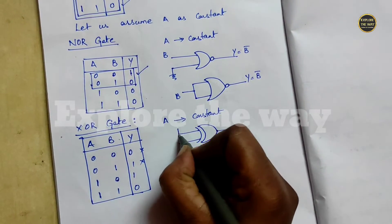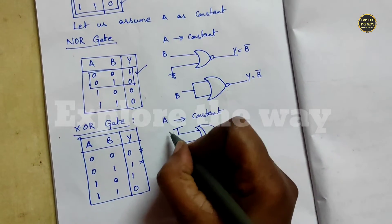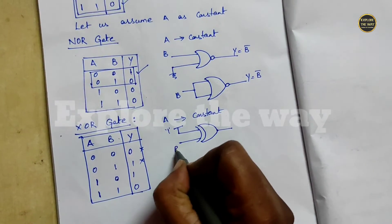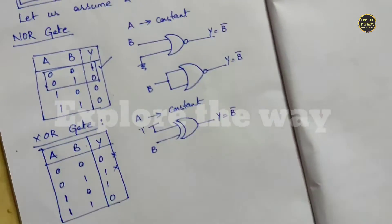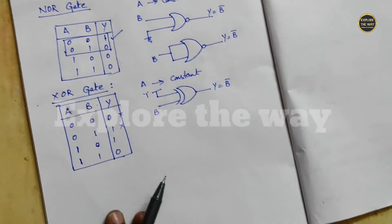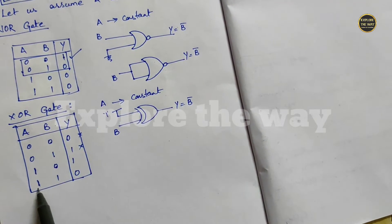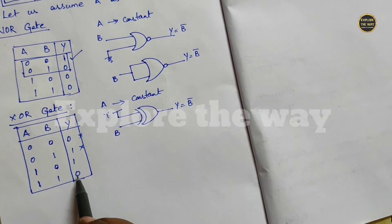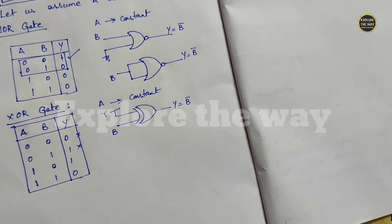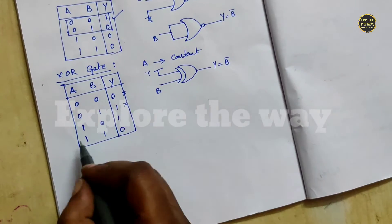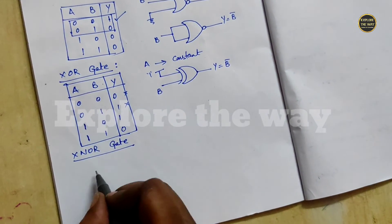Connect one input to logic 1; this is the second input, then Y equals B-bar. Again, just like the previous two cases, when both inputs are 0 output is 0, and when both inputs are 1 output is again 0. So we cannot derive inverter functionality from that combination.